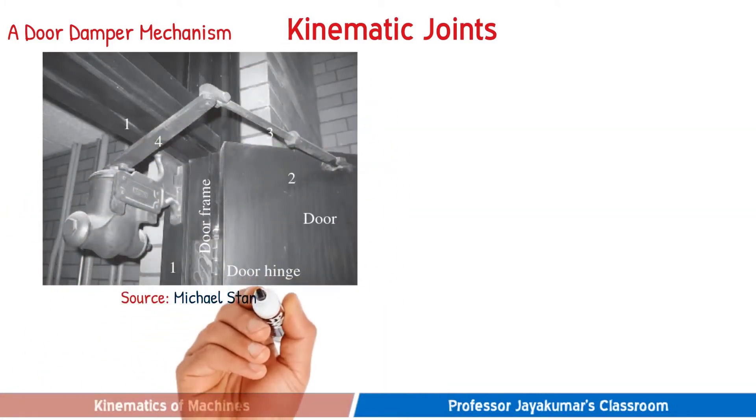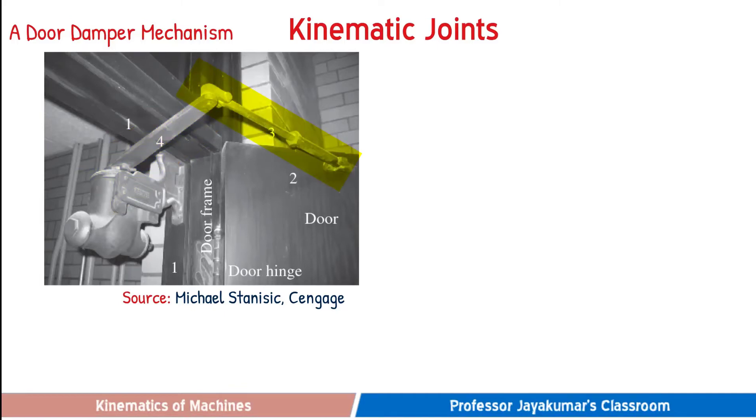In this mechanism, the fixed link is link one that includes the door frame and the housing of the large damper. The door acts as link two that rotates relative to the frame via the door hinge. Link four rotates relative to link one, and link three is connected to links two and four by pins at its ends.